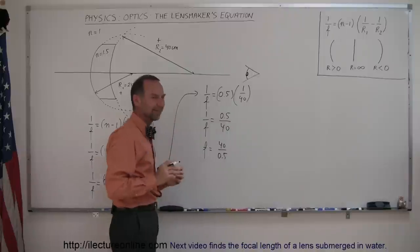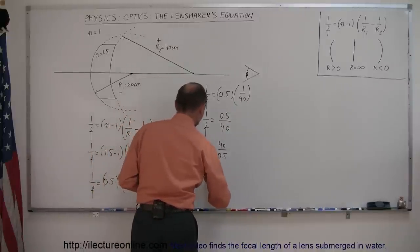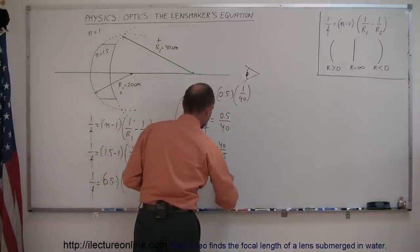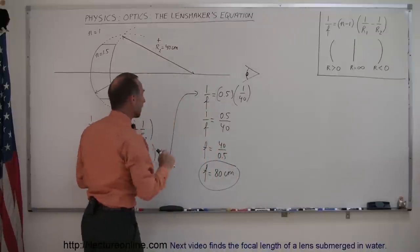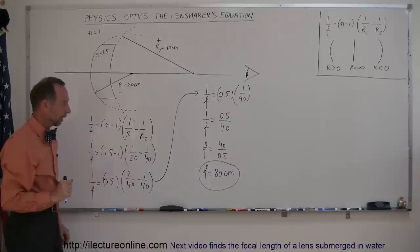and of course dividing by half is the same as multiplying by 2, and so the focal length of this lens is equal to 80, and we'll use centimeters because we used centimeters for the radii of curvature of both sides of the lens.